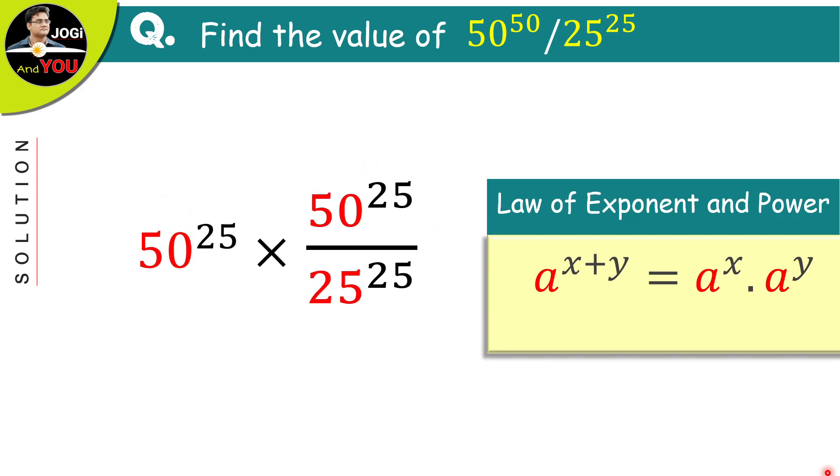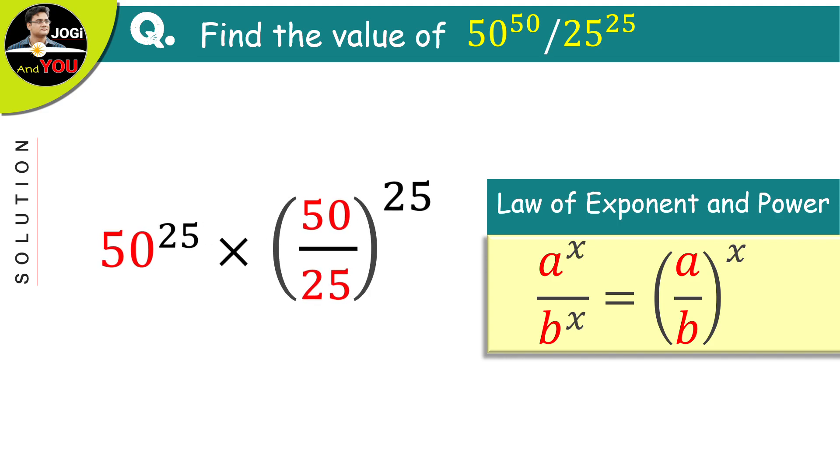Rearrange it a bit. And now, we have another property of exponent and powers to proceed this form which is in front of us. And the rule is, if we have two different bases in the division with the same powers, then we can take that power as common. So, let's do it like that and as the result, we will have 50 over 25 and the whole raised to the power of 25.